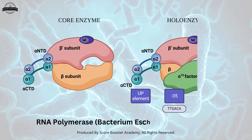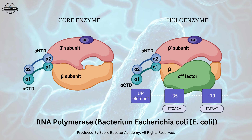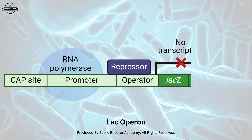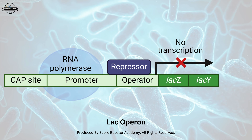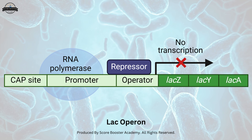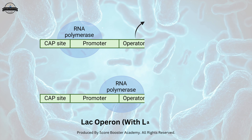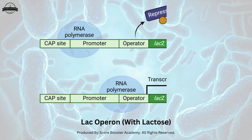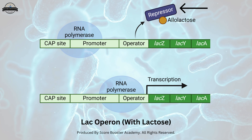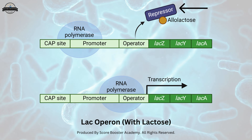In E. coli, the lac operon is a well-studied model of gene regulation. The lac operon contains genes involved in lactose metabolism and is regulated by the presence or absence of lactose. When lactose is present, it binds to the repressor protein, causing the repressor to detach from the operator region, allowing RNA polymerase to transcribe the operon's genes.